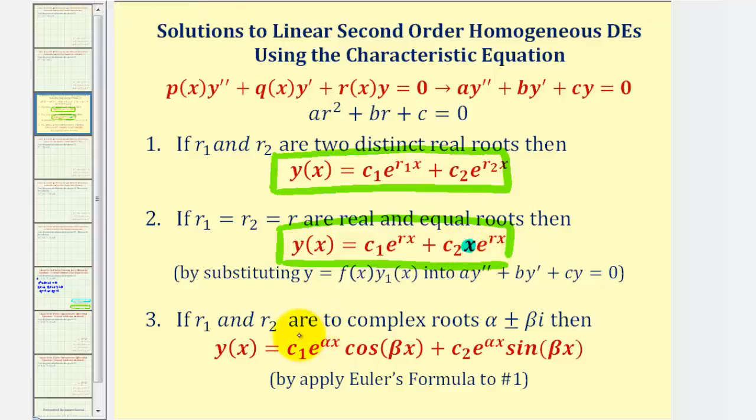And then if we have two complex solutions, the general solution takes this form, where the complex solutions are alpha plus beta i.